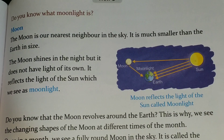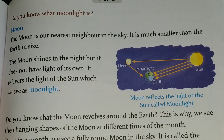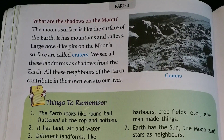Our next topic is the changing shapes of the moon. To understand this, you need to watch a video. I'll share a video with you and you have to watch it. After watching the video, you will read page number 97 of your book. I hope by now you have watched the video, so let's continue further.